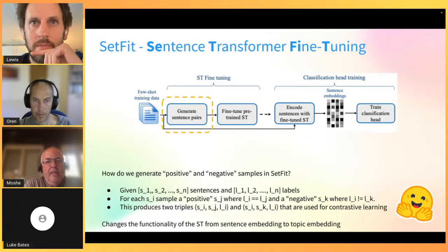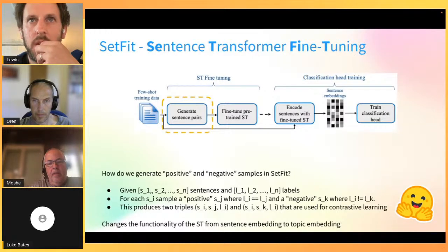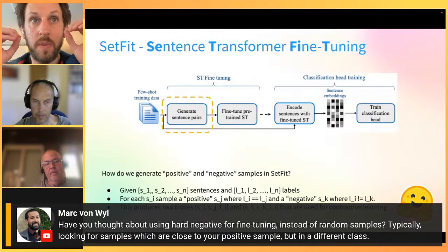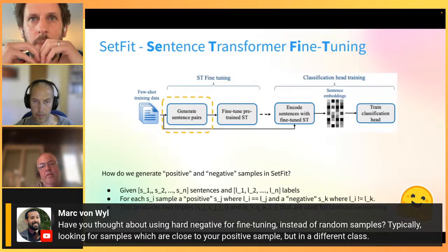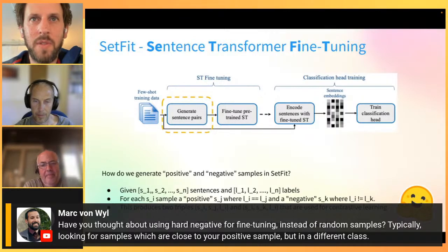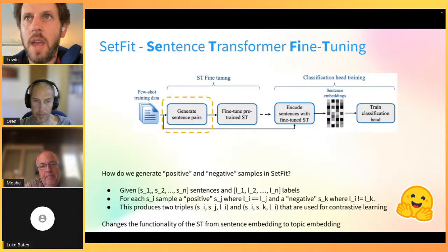Question about using hard negative examples for fine-tuning instead of random ones - specifically looking for samples close to your positive sample but from a different class. We didn't run this experiment; the results shown used random sampling. The intuition is that hard negatives might slightly improve performance - a good direction for future experiments.